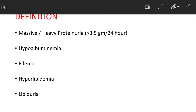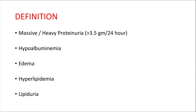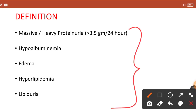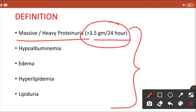First, what do we mean by nephrotic syndrome? Five groups of clinical manifestations define it. In nephrotic syndrome, the patient will have massive or heavy proteinuria — protein lost in the urine. This is a very severe form: the patient can have greater than 3.5 grams of protein loss in 24 hours. Because of this, blood protein — particularly albumin — will decrease, which is known as hypoproteinemia or hypoalbuminemia.